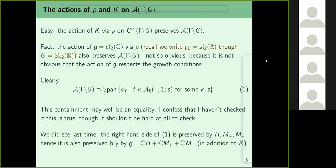Last time we saw that the span of all phi_f is preserved by the operators H, M+, and M−. Therefore that space is also preserved by g. So the span of all phi_f is preserved by both K and g. This was because M+ and M− correspond to the weight-raising and weight-lowering operators of Maass forms.